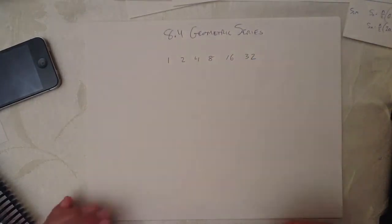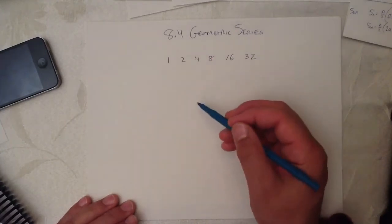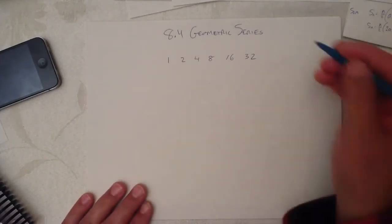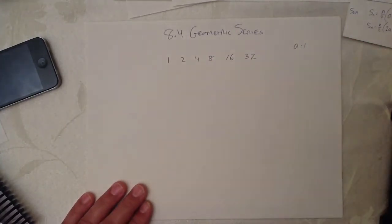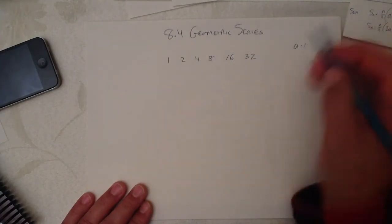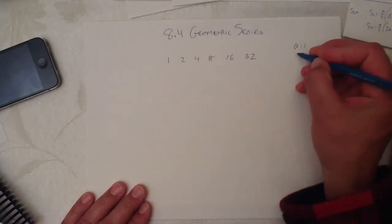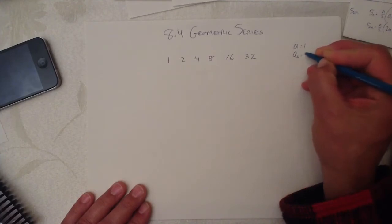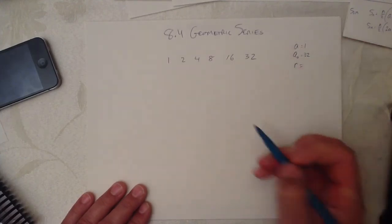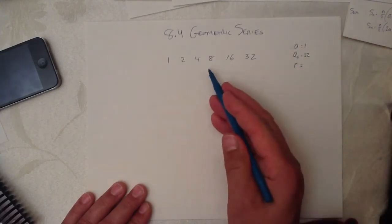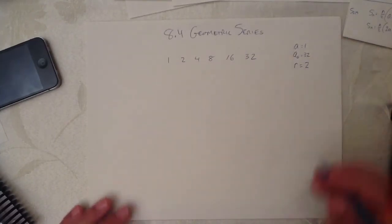Here's a geometric series. In this geometric series, you recognize A equals 1: A2, A3, A4, A5, A6. So A6 equals 32. R equals — what are we doing each time? Multiplying by 2, so R equals 2.